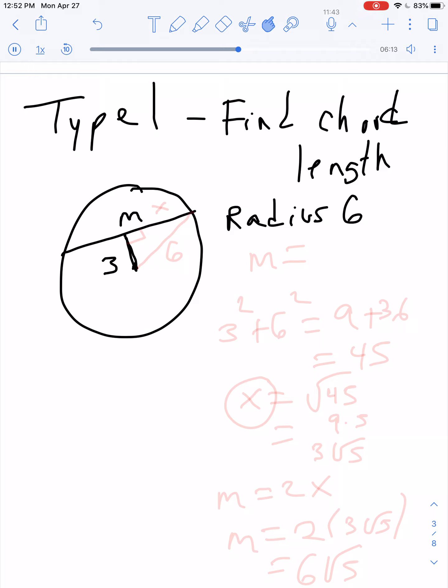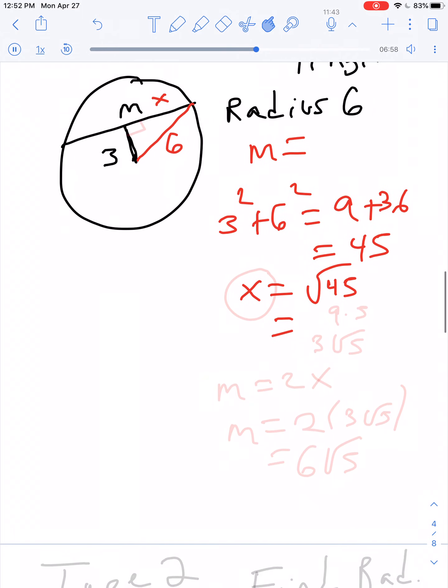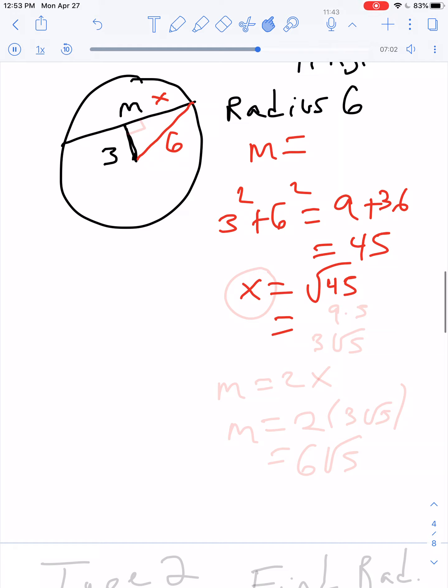We want to find what is M equal to. Not much information there. But if the radius is 6, draw in the radius right there, 6. So then by Pythagorean theorem, I could find this little piece X. 3 squared plus X squared is 6 squared. 9 plus X squared equals 36. So then X squared would equal 45. X would equal square root 45, otherwise known as 9 times 5 or 3 root 5. So this would be 3 root 5. That's X.